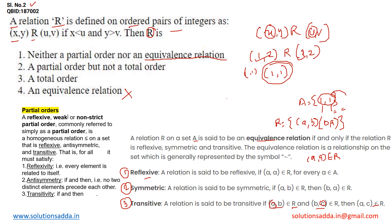Now let's check another type of relation, that is partial order. What is the meaning of partial order? When a relation satisfies the reflexive, weak or non-strict partial order, commonly referred to simply as partial order.